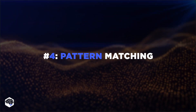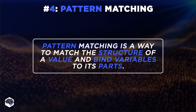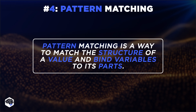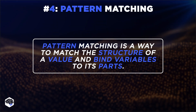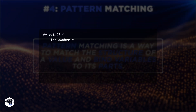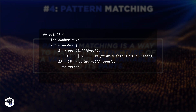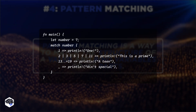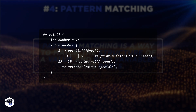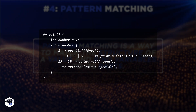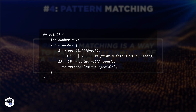Now let's discuss another powerful Rust feature: pattern matching. It enables matching different data patterns, facilitating concise and expressive code to handle various cases effortlessly. This part of Rust code categorizes a given number into different groups based on its value using a match statement. Depending on the value of the number, it prints different messages, such as indicating if the number is a prime, a teen, or not particularly special.